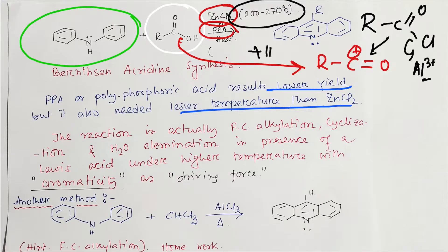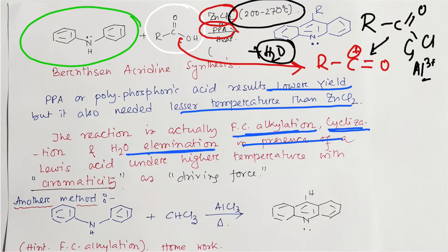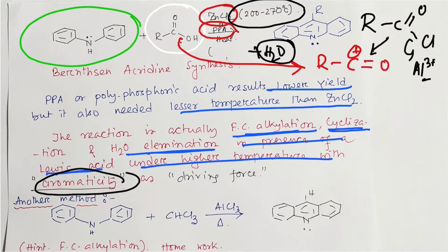At this high temperature, water is also eliminated as a byproduct. If you look at the reaction closely, it is a combination of Friedel-Crafts acylation, cyclization, and water elimination in the presence of a Lewis acid — either zinc chloride or polyphosphoric acid — under high temperature. The driving force for this reaction is aromaticity.